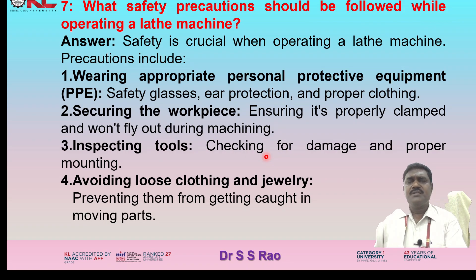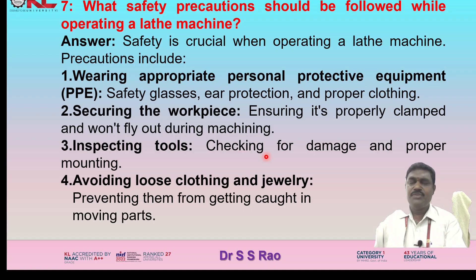What safety precautions should be followed while operating a lathe machine? Safety is crucial when operating a lathe machine. Precautions include: wearing appropriate personal protective equipment (PPE) such as safety glasses, ear protection, and proper clothing; securing the workpiece — ensuring it is properly clamped and won't fly out during machining; inspecting tools — checking for damage and proper mounting; and avoiding loose clothing and jewelry to prevent them from getting caught in moving parts.